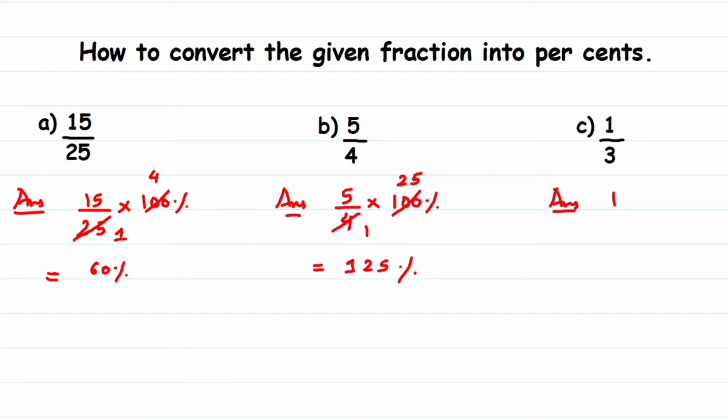So 1 by 3, converting into percent, multiply by 100 percent. Now we cannot cancel this number 100 and 3, so you can write the answer as 100 upon 3 percent.